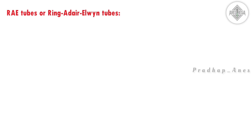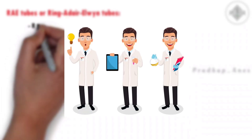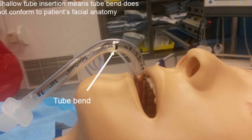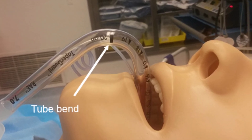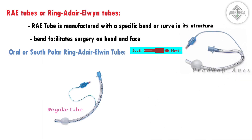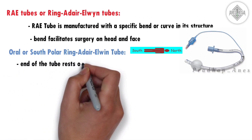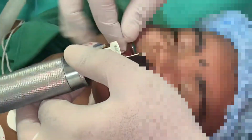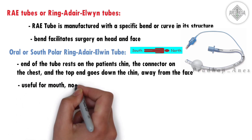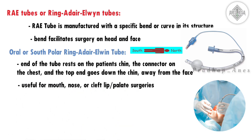RAE tubes, or Ring-Adair-Elwin tubes, are named after their inventors Ring, Adair, and Elwin. The RAE tube is manufactured with a specific bend or curve in its structure. This preformed bend facilitates surgery on the head and face. The oral, or south-polar, Ring-Adair-Elwin tube is bent at an angle so the end of the tube rests on the patient's chin, with the connector near the chest and the top end going down the chin away from the face. This makes it useful for mouth, nose, or cleft lip and palate surgeries.